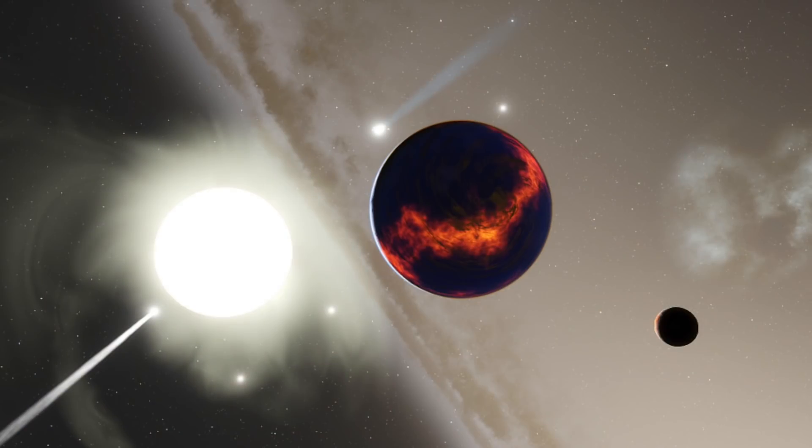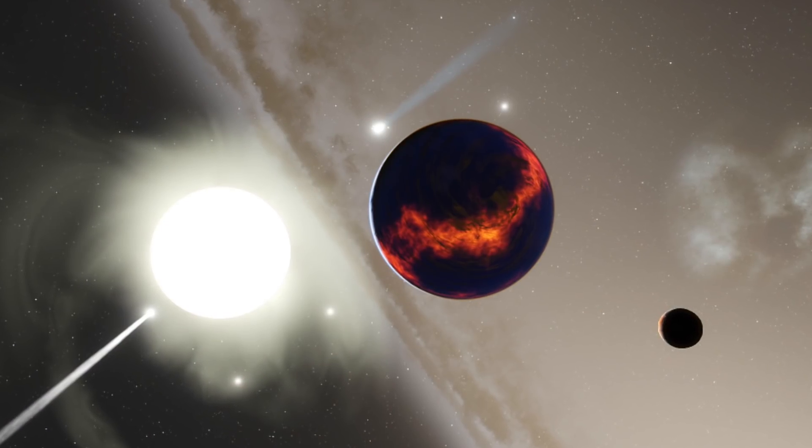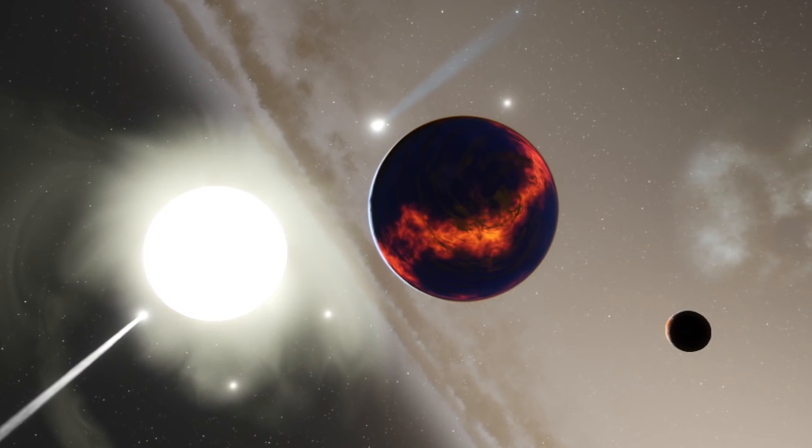One such planet is the enormous gas giant named WASP-121b, which is located 850 light-years from Earth and is tidally locked with the same side always facing its star. This exoplanet offers an incredibly interesting case study for astronomers for many reasons.